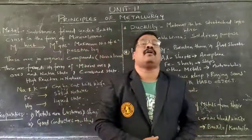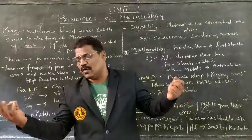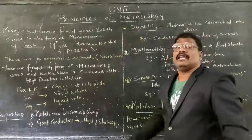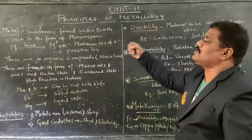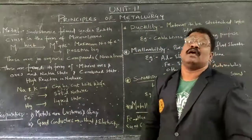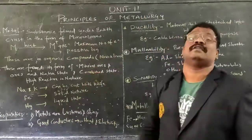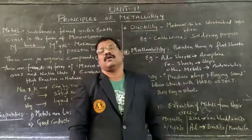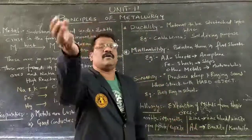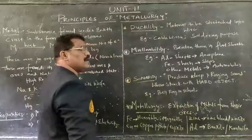These metals and alloys play an important role in our household appliances. The extraction of pure metals from the earth's crust — where they exist in the form of mineral ores or native state metals — is called metallurgy.